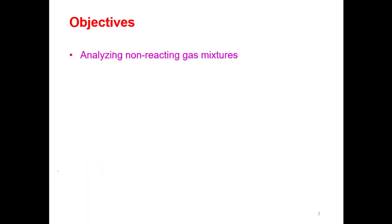This chapter is based on analyzing non-reacting gas mixtures. We have two types of mixtures: reacting mixtures and non-reacting gas mixtures. For example, if there is a mixture of ammonia gas and carbon dioxide, they will immediately react with each other — that's a reacting mixture. But this chapter deals with the non-reacting mixture.